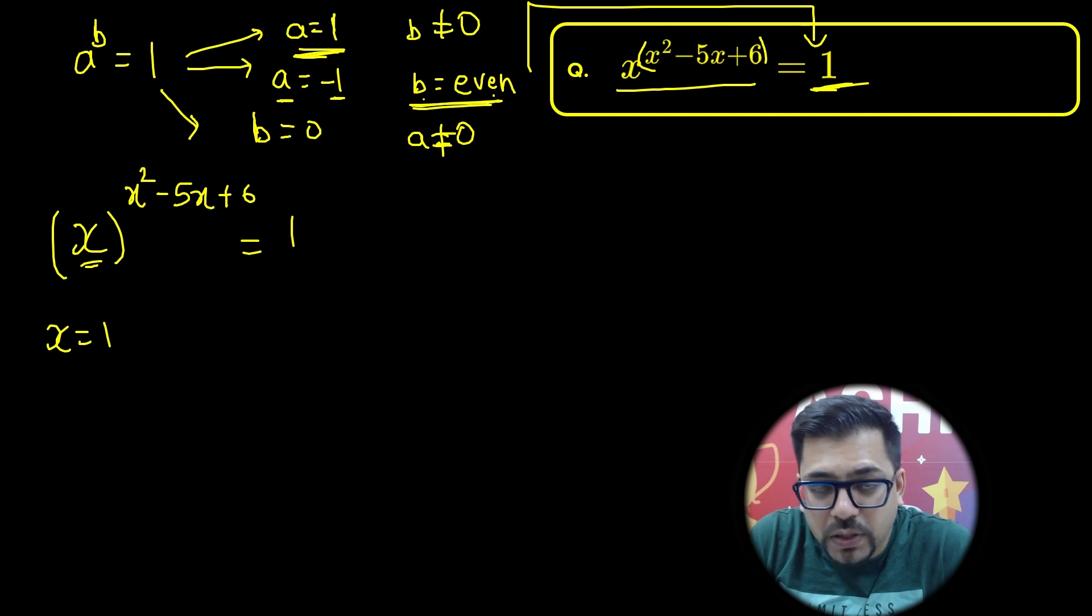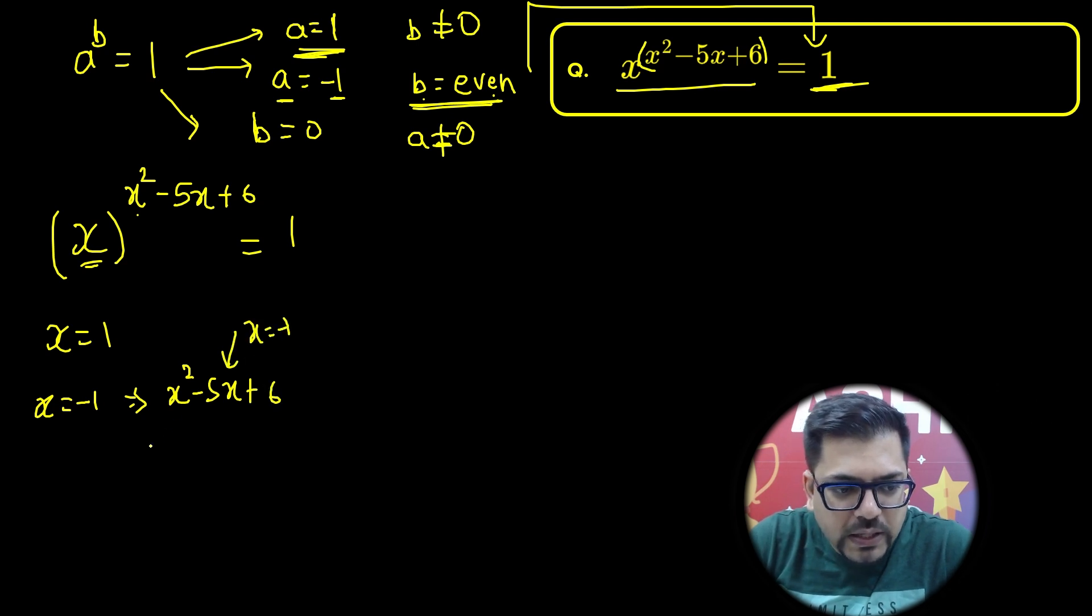Now second is base is minus 1, and at that time we have to see that the power should be even. So let's check that if x equals minus 1, what is the value we are getting for x squared minus 5x plus 6.